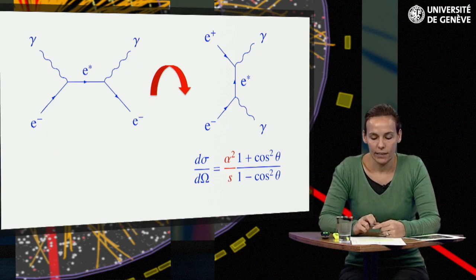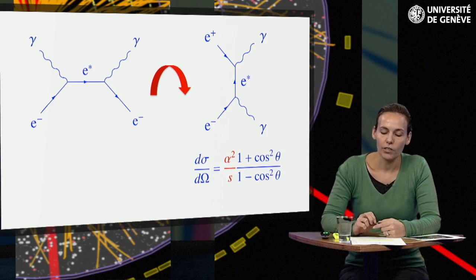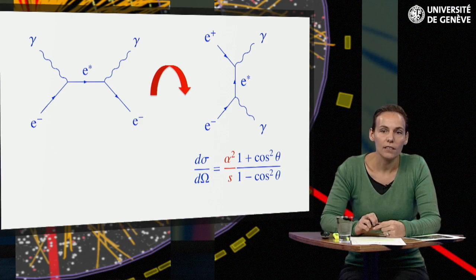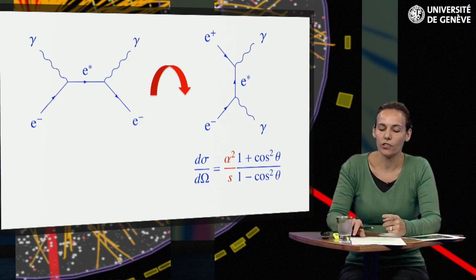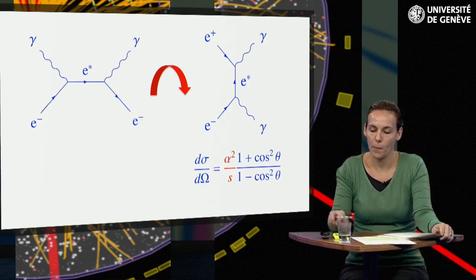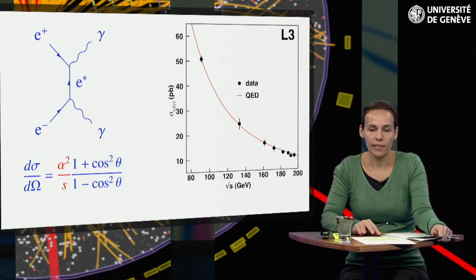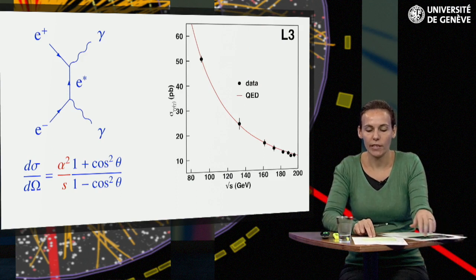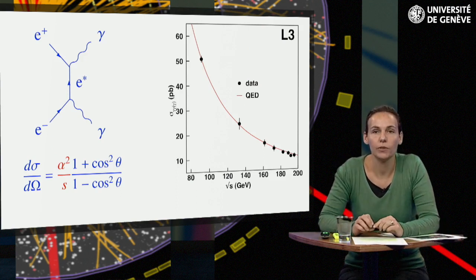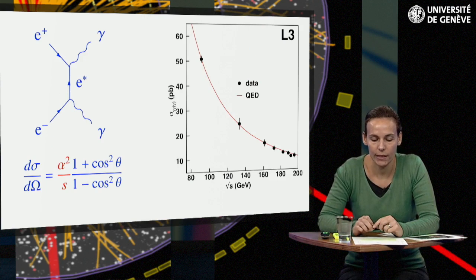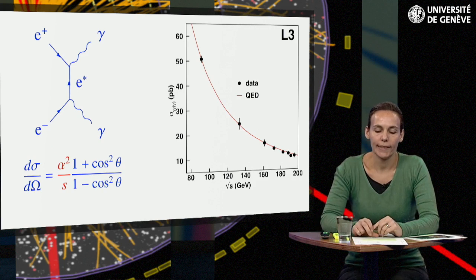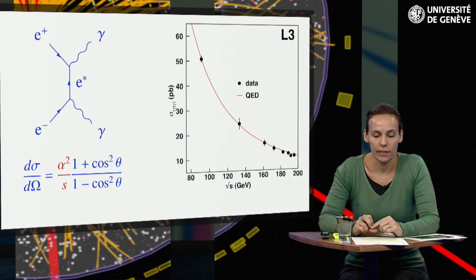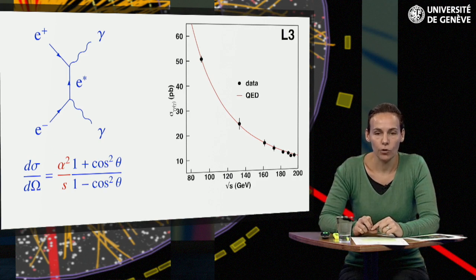Note again the characteristic factor alpha-square, which comes from the coupling constants, and 1 over s, which characterizes the square of the energy available in the process. We have chosen the center of mass frame, where the electron and positron collide with equal and opposite momenta. The photons are therefore also emitted with equal and opposite momenta. The scattering angle theta is the angle between the incoming electron and the outgoing photons.